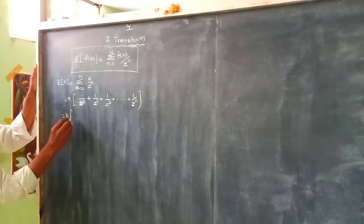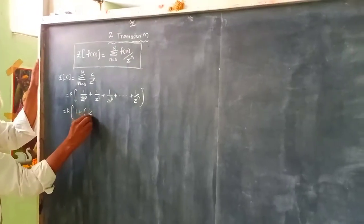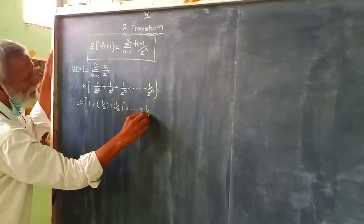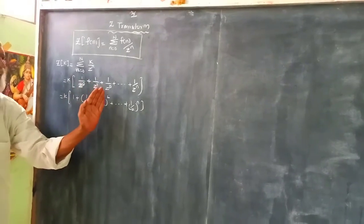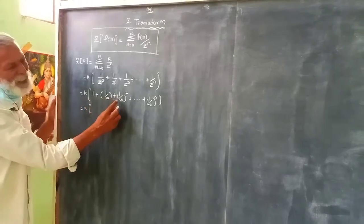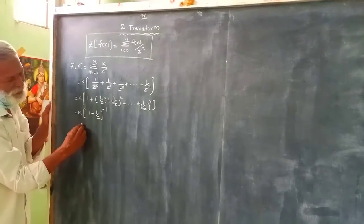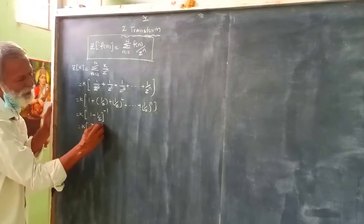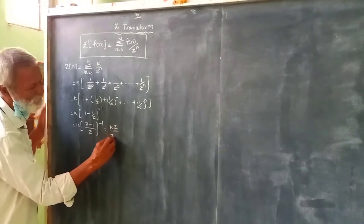This gives 0, then 1/z, 1/z², and so on up to 1/z^n. Using 1 + x + x² + ... equals (1-x)^(-1), this becomes kz/(z-1).